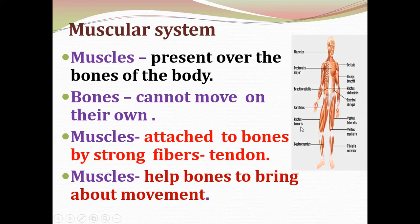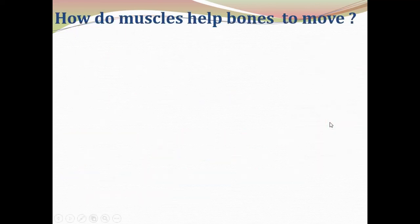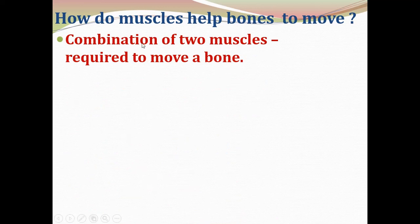Here you can see the muscular system of the human body. There are different types of muscles which you will study in your higher class. Now let us study how muscles help bones to move. A combination of two muscles is required to move a bone — if a bone wants to move, there should be two muscles present.